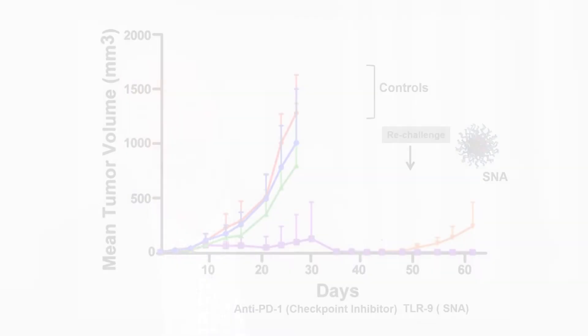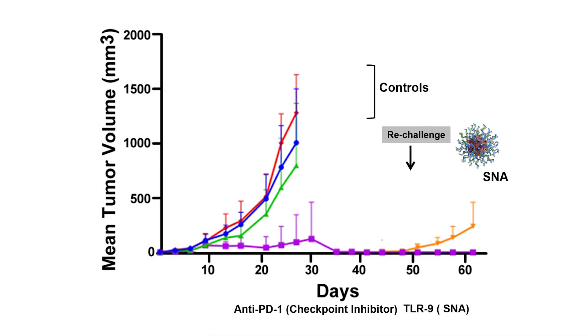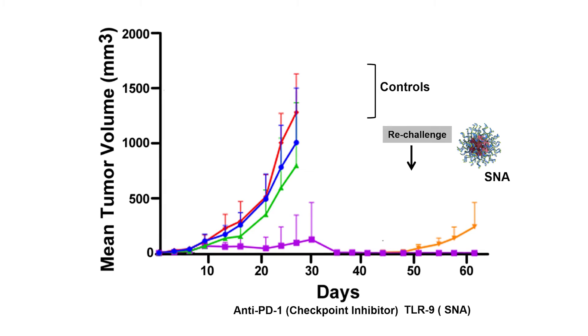Perhaps the more exciting area is one that's about to go into clinical trials: using spherical nucleic acids in combination with existing drugs called checkpoint inhibitors. There we're trying to create therapeutics where we can tweak the immune system — for example, by activating TLR9 with a spherical nucleic acid — and give a patient or an animal that has the disease a checkpoint inhibitor that keeps tumor cells from evading the immune system.